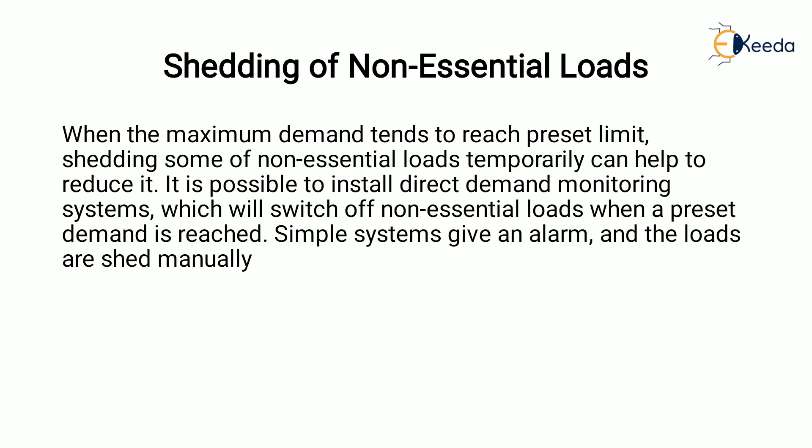Next is shedding of non-essential loads. When maximum demand tends to reach a preset limit, temporary removal of some non-essential loads can help to reduce the maximum demand on the system. It is possible to install a direct demand monitoring system which will switch off non-essential loads when a preset demand is reached. A simple system gives an alarm and the loads are shed manually. Alternatively, a maximum demand controller can be installed which will remove loads in a particular sequence and then switch them back on once the system is within limits.